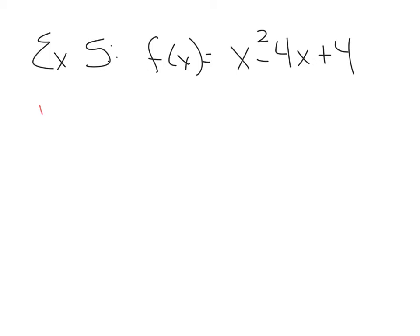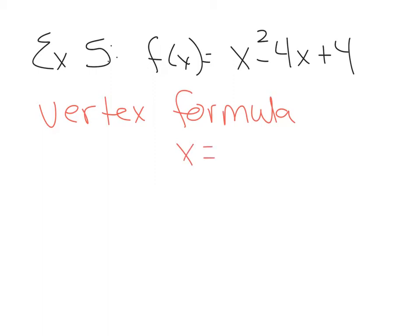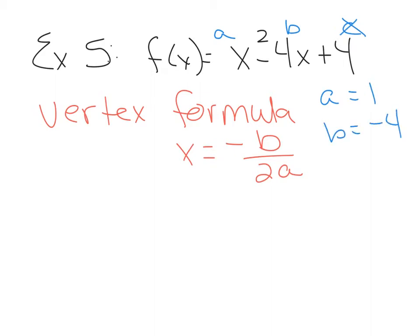The vertex formula says I can find the x-coordinate by making a ratio of negative b over 2a. It is part of the quadratic formula if you recognize it. The coefficients will be a, b, and c — you don't need c for this formula, only a and b. So a is going to be 1, and b is going to be negative 4. This gives me the x-coordinate for the vertex.